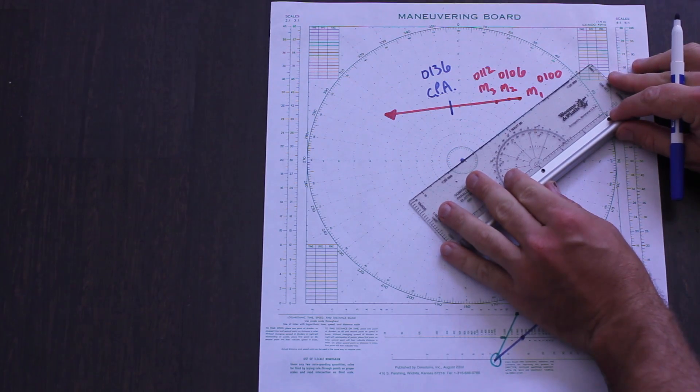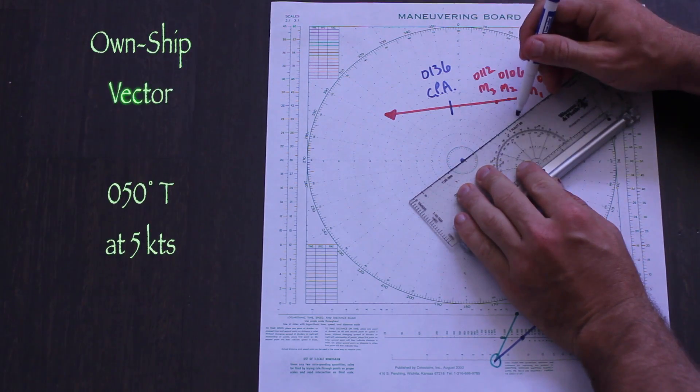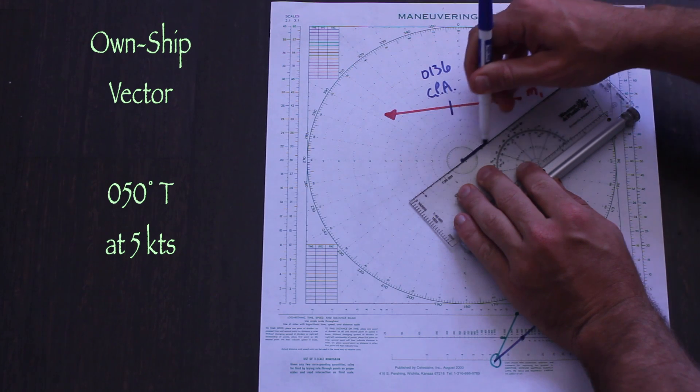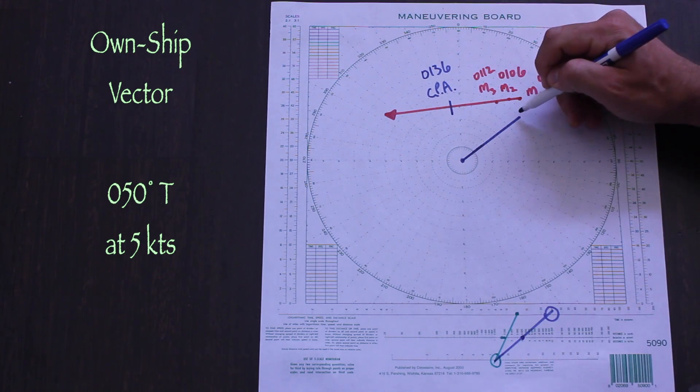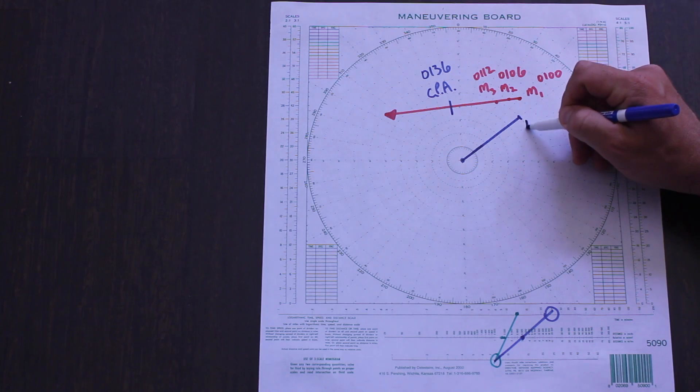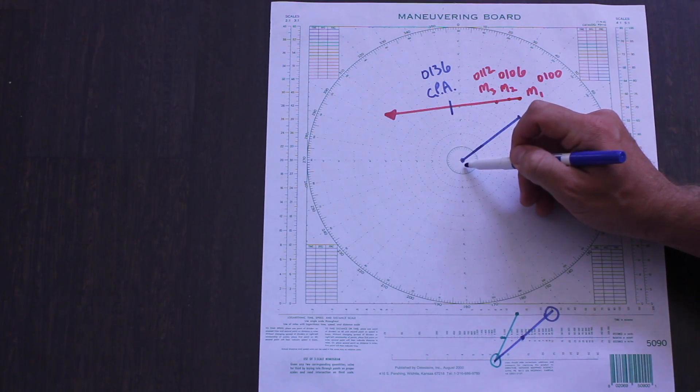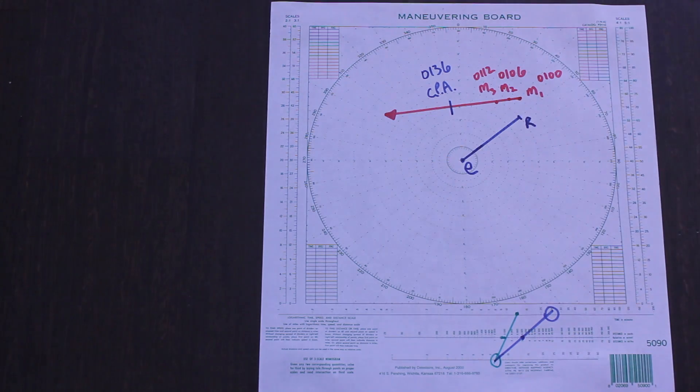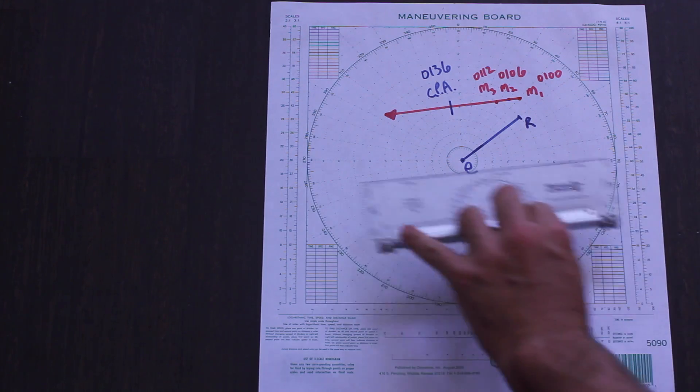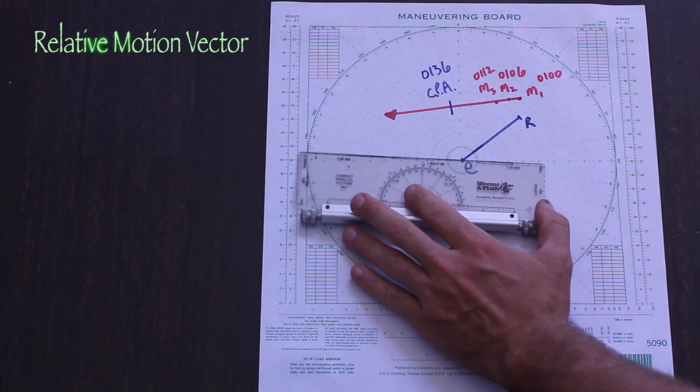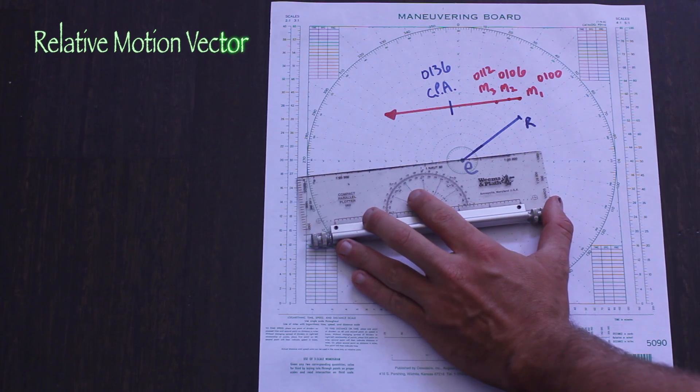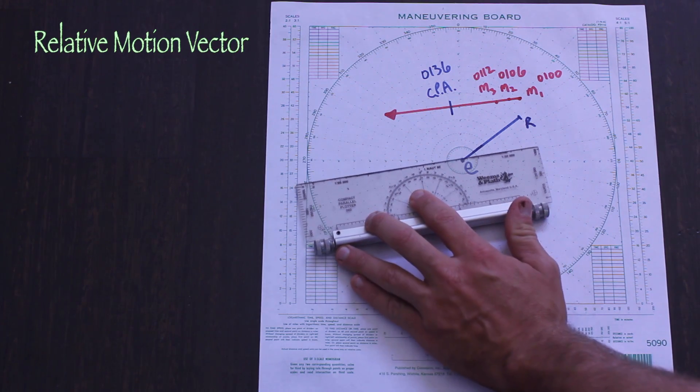So the first thing we'll do is plot our vector, E to R, representing our true course and speed. Next, we need to plot the relative motion vector. You could measure from the center, but most often we just parallel the actual relative motion line to the point R.